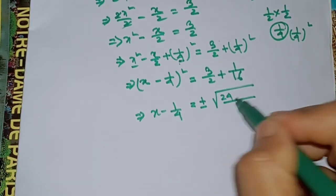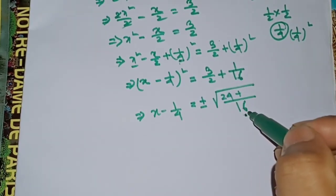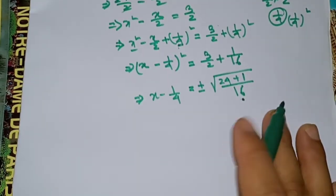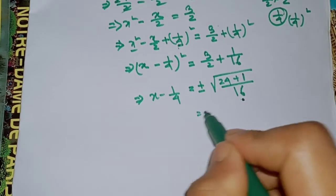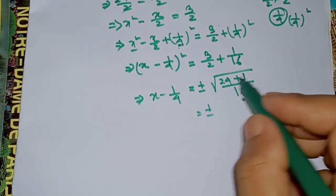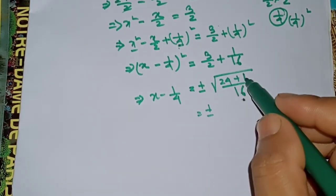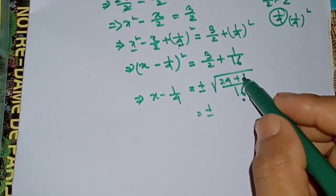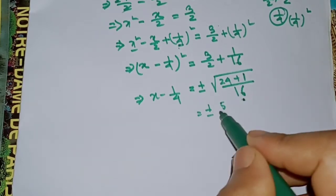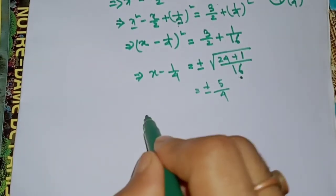24 plus 16 equals 1, plus or minus 25 — that is 5 — divided by 4. So x equals 5 by 4.